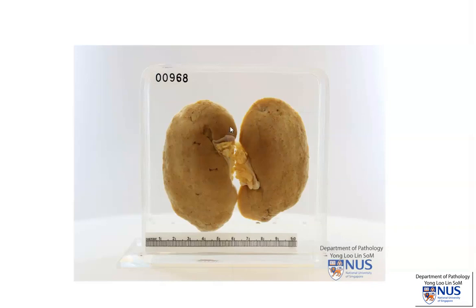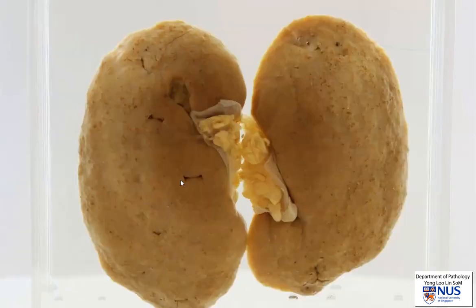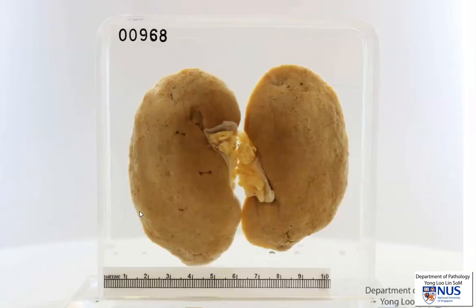Here is a specimen of a kidney which has been bivalved. This is the renal capsule. You can see that the capsule is not smooth as it would be in the normal kidney. There are many really tiny scars here.